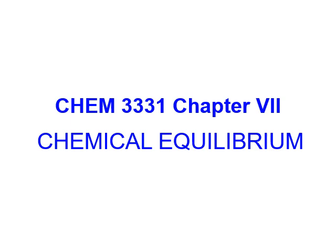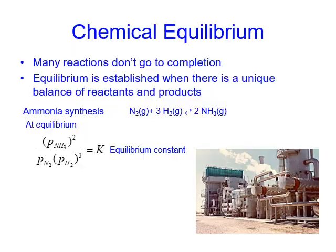Chapter 7, Chemical Equilibrium. As we know, many chemical reactions do not go to completion. For example, for ammonia synthesis, if we add one mole of nitrogen and three moles of hydrogen, you will not get two moles of ammonia. Instead, you may get 1.9 moles of ammonia, and there is some nitrogen left, some hydrogen left.